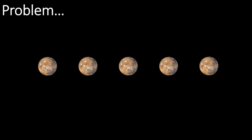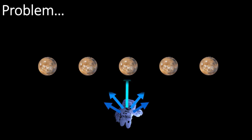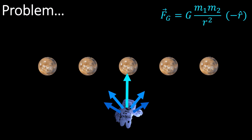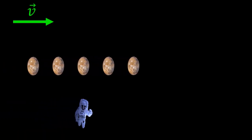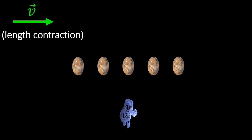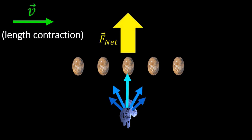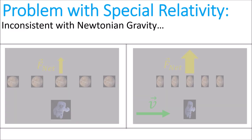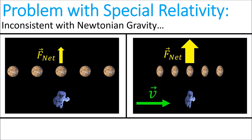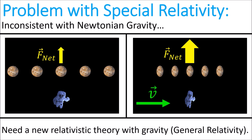Special relativity is a very impressive theory, but it does have a big problem. If we have a collection of small planets arranged in a long line, and added up their net gravitational forces on an astronaut located here, according to Newton's law of gravity, the astronaut would be pulled upward by the net force. However, in another reference frame that's moving parallel to this line, this line of planets undergoes length contraction, and becomes more densely packed together. This increases the net strength of their gravitational force on the astronaut. The fact that the gravitational force is different in different inertial reference frames means that Newton's law of gravity is inconsistent with special relativity. To get things right, we need a new theory of relativity that deals with gravity properly, which is general relativity.